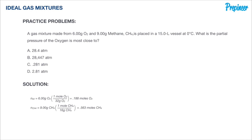The total moles within the system is 0.188 plus 0.563, for a total of 0.751 moles. The mole fraction of oxygen is the number of moles of oxygen divided by the total moles of the mixture, giving a mole fraction of 0.25.